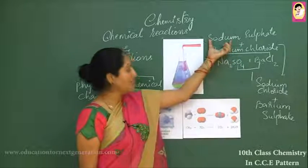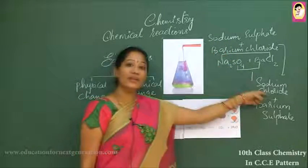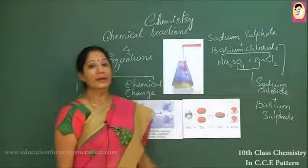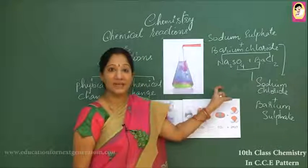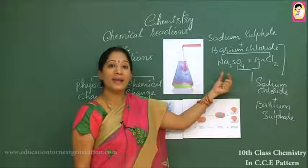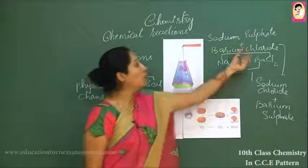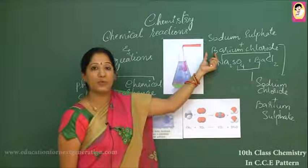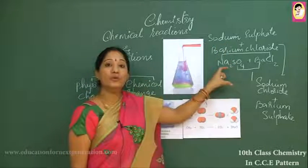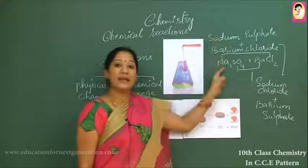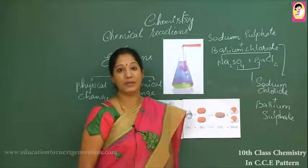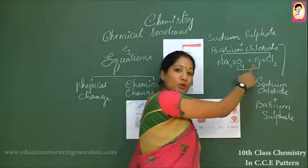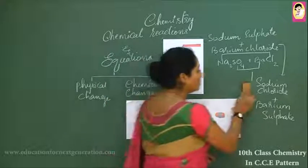Writing reactions as word equations — for example, sodium sulfate reacts with barium chloride to give rise to sodium chloride and barium sulfate — is a lengthy process consuming much time. You cannot understand how many atoms of sodium, sulfate, or barium are participating. That is why reactions are written as mathematical expressions, like: Na₂SO₄ + BaCl₂ → BaSO₄ + NaCl.